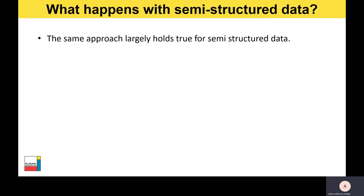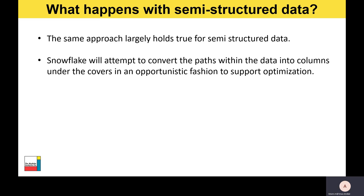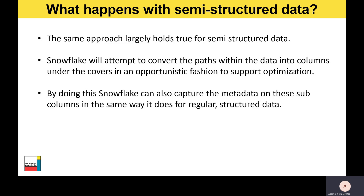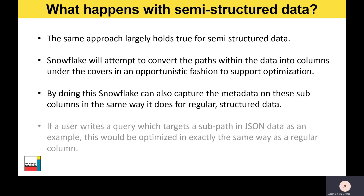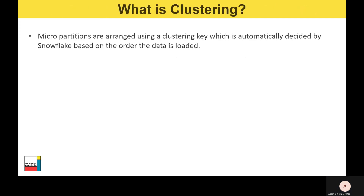What happens with semi-structured data? The great thing is that with Snowflake the same approach largely holds true. Snowflake will attempt to convert the paths of a JSON dataset into columns behind the scenes in an opportunistic fashion to support query optimization. By doing this, Snowflake can capture metadata on those sub-columns in the same way it does for regular structured data. If a user writes a query targeting a sub-path in JSON data, it would be optimized in exactly the same way as a regular column.